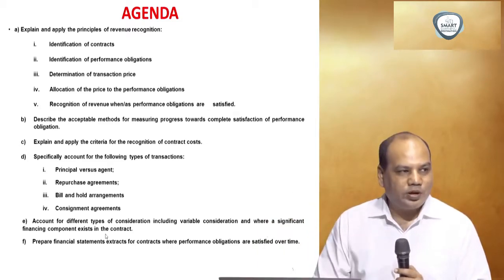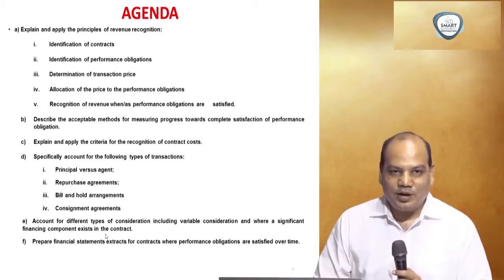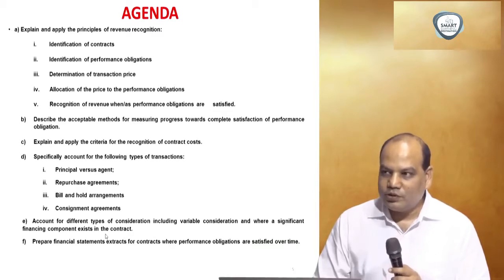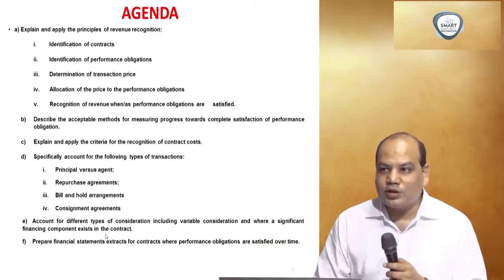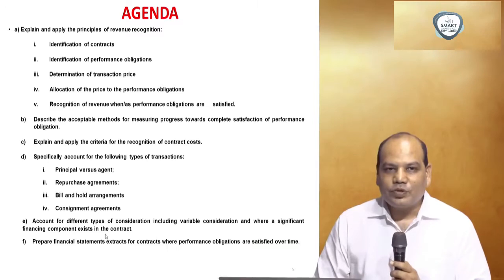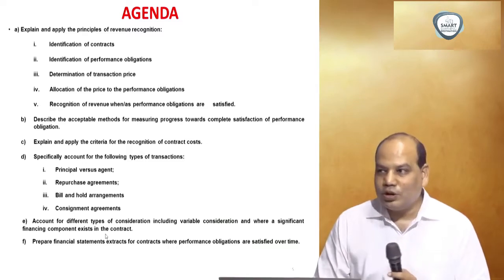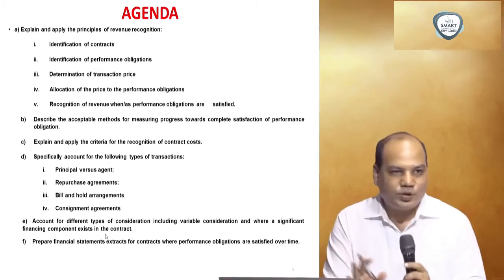Previously, revenue should be recognized when the risk and reward of ownership is transferred to the buyer. This standard shifts the base — now it says when control is transferred to the customer. So we move from a risk-and-reward approach to a control approach. Revenue is recognized when control is shifted to the customer. This standard looks at revenue from the customer's point of view.